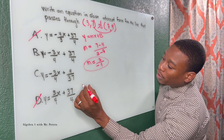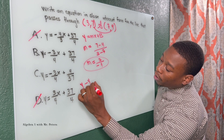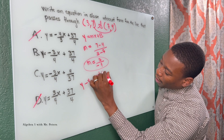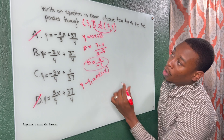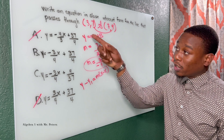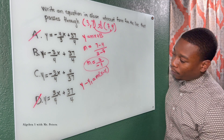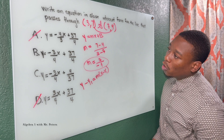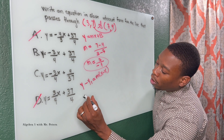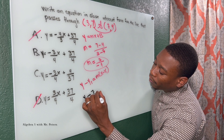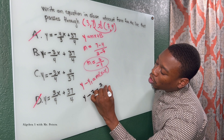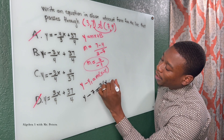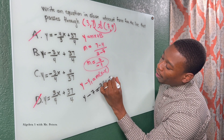Now to complete this problem, we use the point-slope formula: y minus y1 is equal to m times x minus x1. We can use any of these two points — I'm going to use the first one. So once I substitute, we have y minus 7 is equal to our slope, negative 3 over 4, times x minus the x value, which is 3.